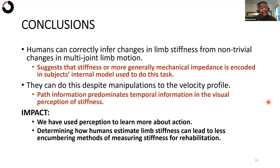And secondly, it suggests that path information predominates temporal information in the visual perception of stiffness.